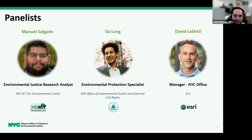I'd like to introduce Tai Lung, who works in the EPA's Office of Environmental Justice and External Civil Rights. Tai has been working there since 2012, and his work focuses on the development of tools and policies that address low income and minority populations overburdened by disproportionately high environmental pollution. Tai leads the EPA's efforts on the EJ Screen, a mapping and screening tool that combines environmental and demographic data to highlight areas with potential environmental justice concerns.